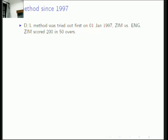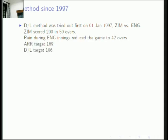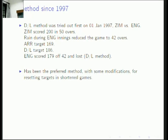England eventually scored 179 off 42 overs. By the ARR method they would have won, but by the Duckworth-Lewis method they lost. It has since been the preferred method, with some modifications, for resetting targets in rain-shortened games.